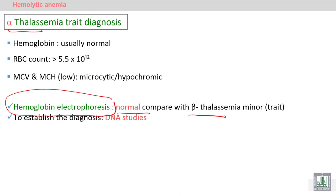Because hemoglobin electrophoresis is normal in alpha thalassemia trait, we have to perform DNA studies. DNA studies is the confirmatory test for alpha thalassemia trait.